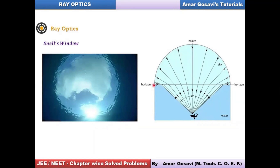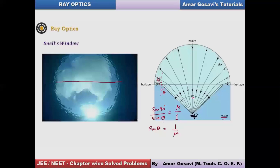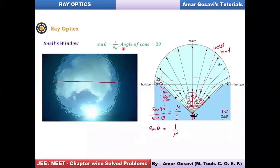In the diagram, the angle of refraction is 90 degrees and theta is the critical angle. Sine of theta equals 1 over the refractive index. Taking a top view, the region through which the fish can see forms a circle — like a window. The diameter of this circular window defines the region through which the fish can view the outside world, including birds flying over water.